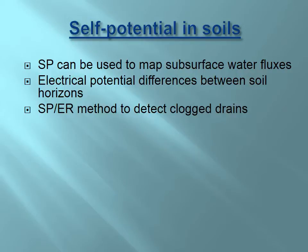In soils, we can also use self-potential measurements to create a map of subsurface water fluxes and find suitable locations for potable water wells. Also, electrical potential differences exist between soil horizons, and we used self-potential and electrical resistivity methods to detect clogged drains.